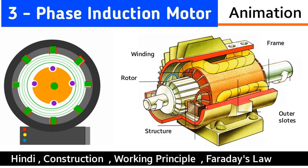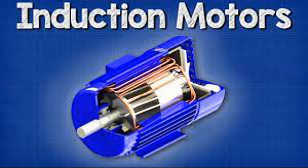As the magnetic field generated by the stator rotates, the rotor tries to catch up with this rotating field. The rotor continues to turn as long as the AC current is supplied, and this rotation can be used to drive various mechanical loads such as pumps, fans, or conveyors.